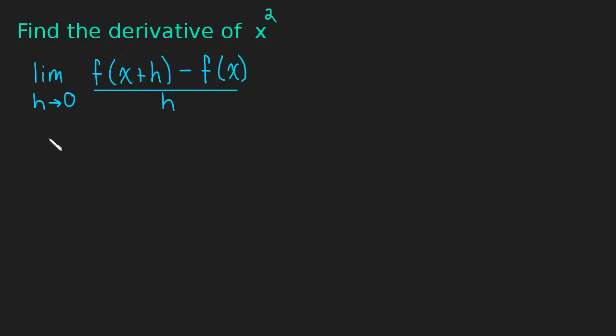Okay, so let's go ahead and do that. So this is the limit as h approaches zero of x plus h squared. So we plug that in for x minus x squared. All divided by h.